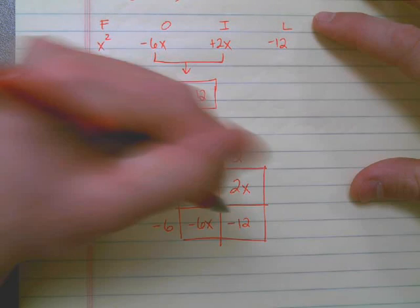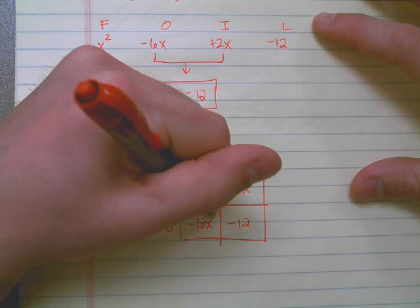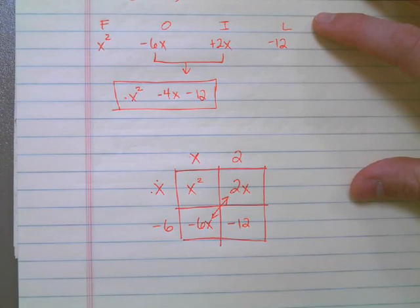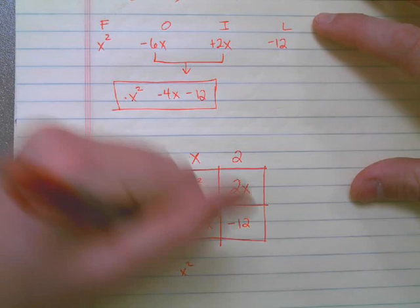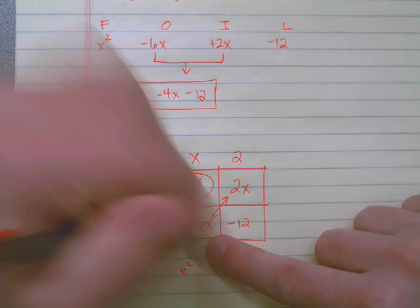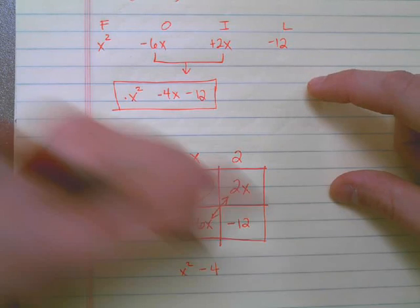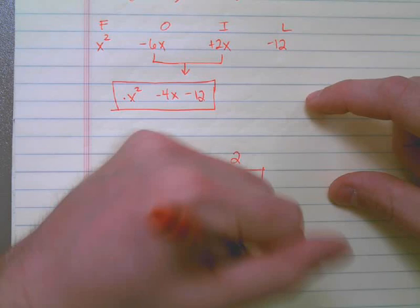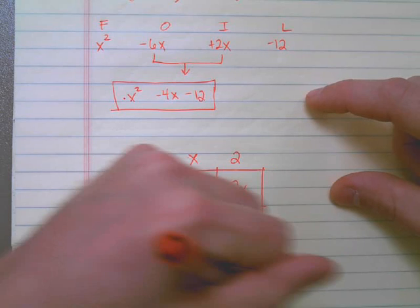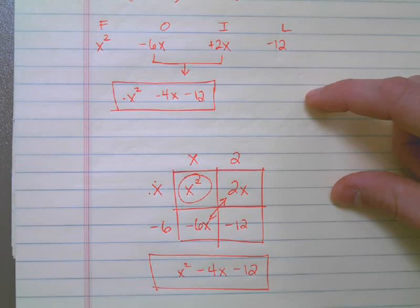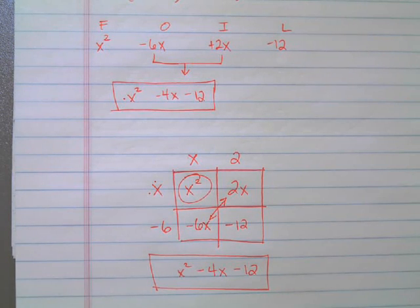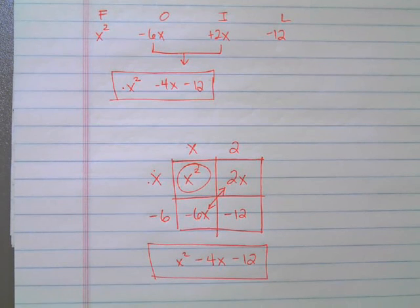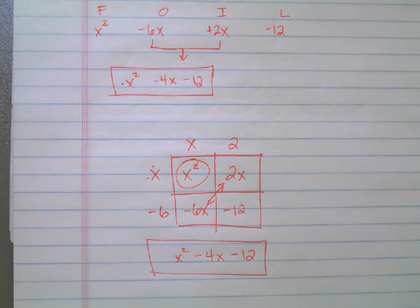And then I note that these two here will combine to give me x². 2x minus 6x, 2 minus 6 is -4x's, so I've gotten rid of those. And then I have the -12 at the end. You're not doing anything different. You will not get a different answer than what you do with FOIL. It's just a different way to visualize what you're doing with FOIL.